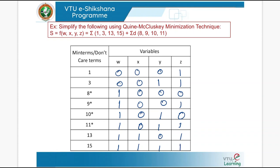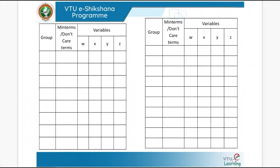Now we have written the binary equivalent of each of the main terms and don't care terms. As per our regular procedure, we have to form groups of the same number of 1s. For example, main term 1 and don't care term 8 can be grouped together because they have only one 1 in them.